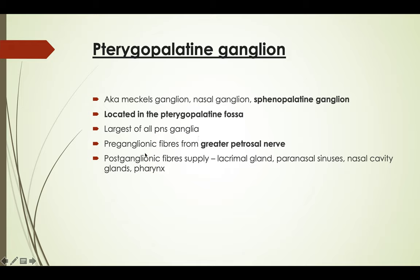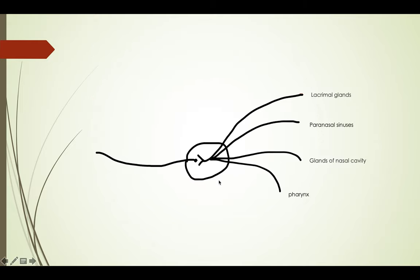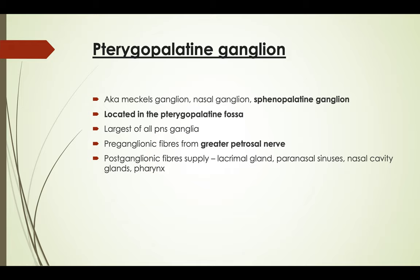The pre-ganglionic fibers of the pterygopalatine ganglion arise from the greater petrosal nerve — don't confuse this with the lesser petrosal nerve. They synapse in the ganglion, and the post-ganglionic fibers arise from the ganglion and supply the lacrimal gland, the paranasal sinuses, the nasal cavity, glands, and the pharynx.